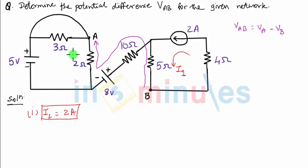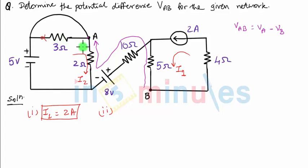Next, let's find the current through the 2 ohm resistance. I'll define the current flowing in the downward direction as I2. In the circuit, there is a short circuit given across the 3 ohm resistance. Because of this short circuit, the 3 ohm resistance becomes redundant — it will not play any role in deciding voltage and current in this circuit. It is as if the 3 ohm is not present. Considering this mesh, there is only one voltage source of 5 volts and one resistance of 2 ohms.